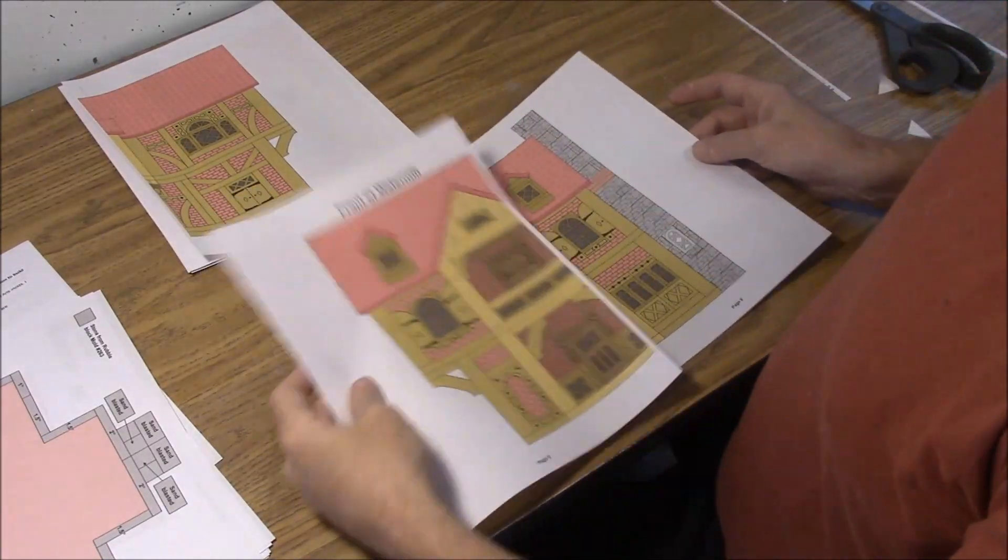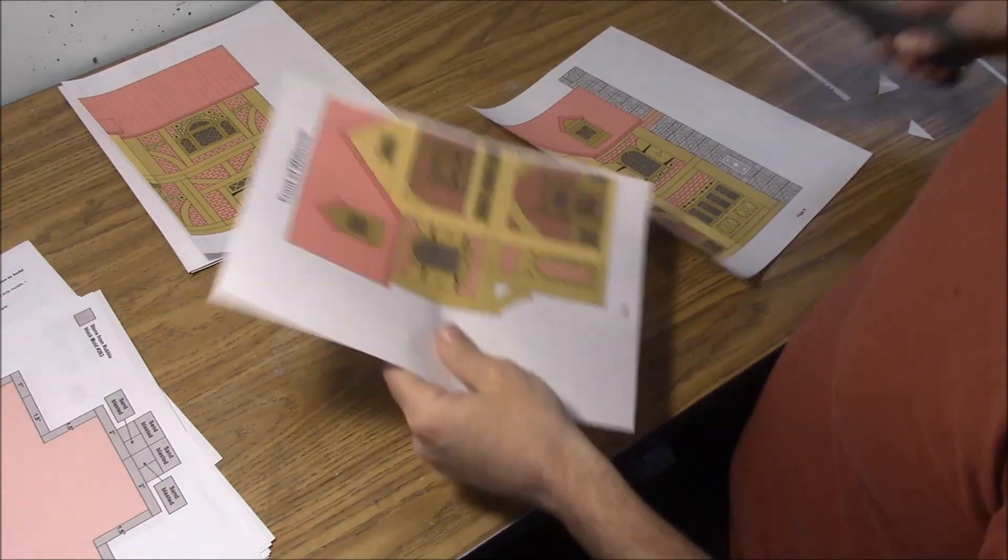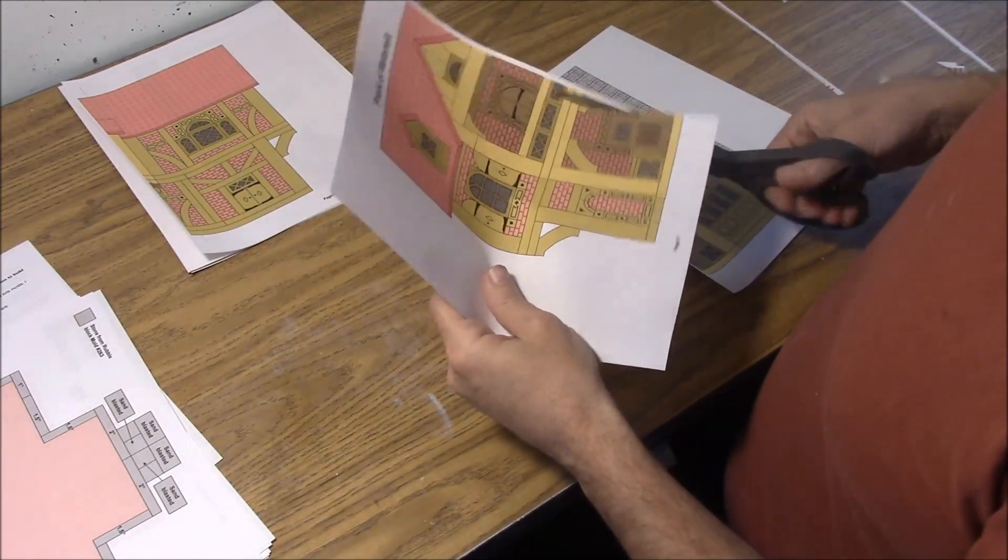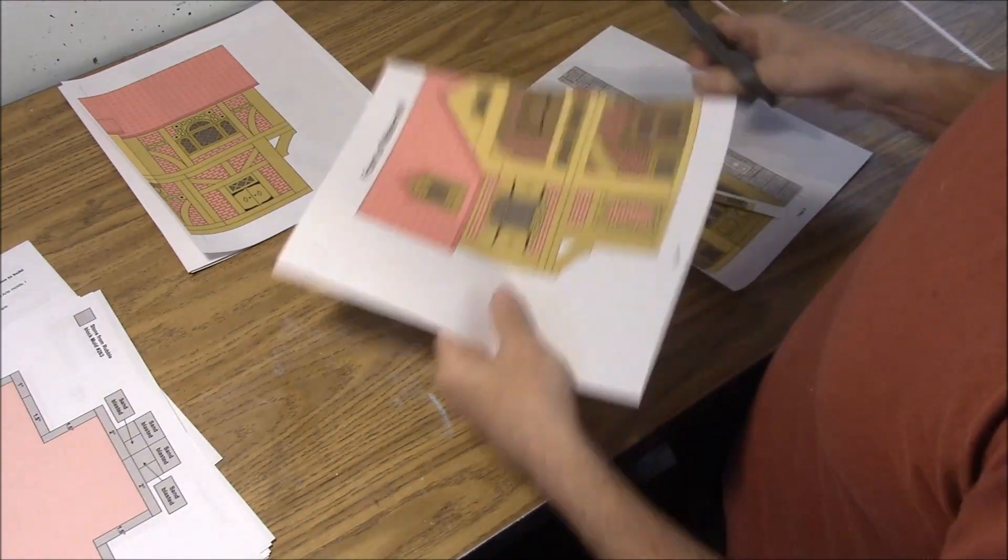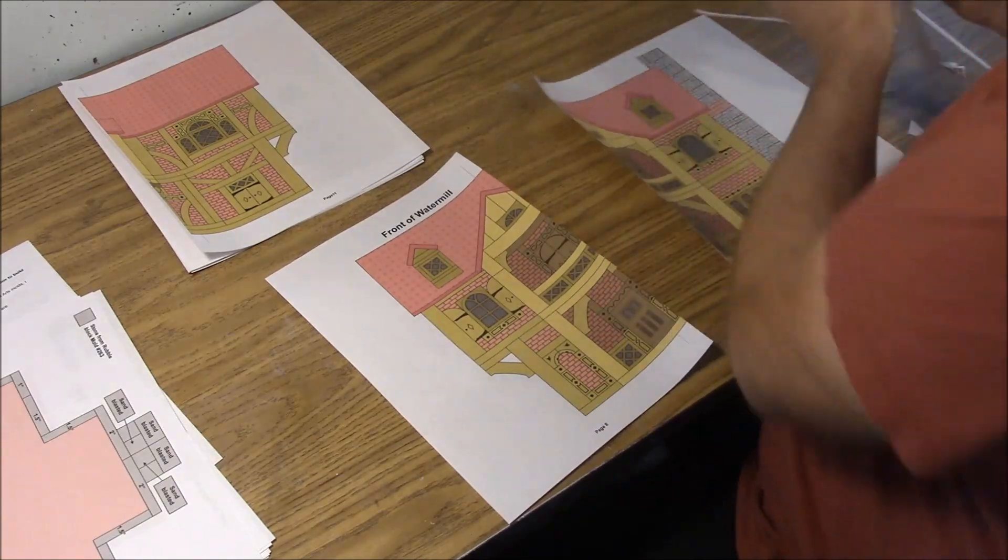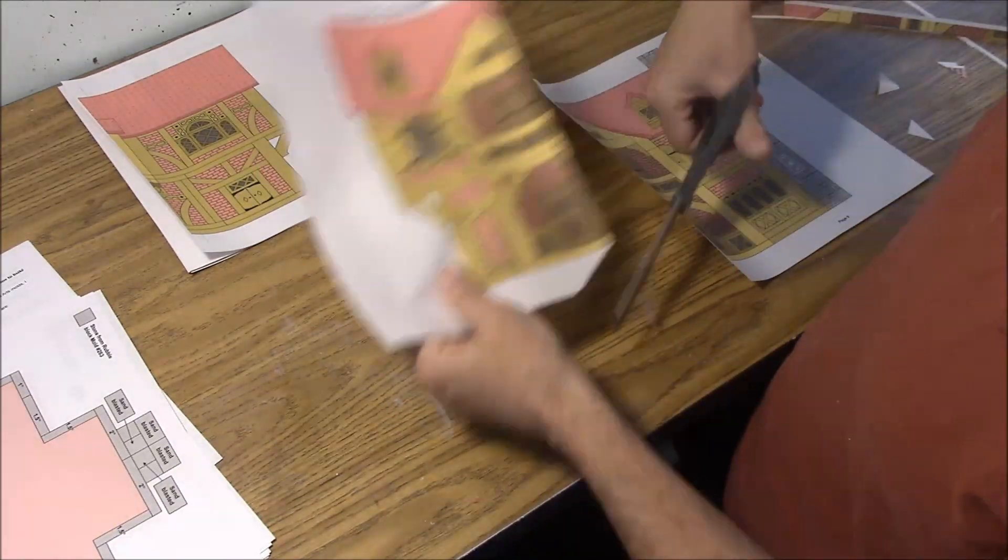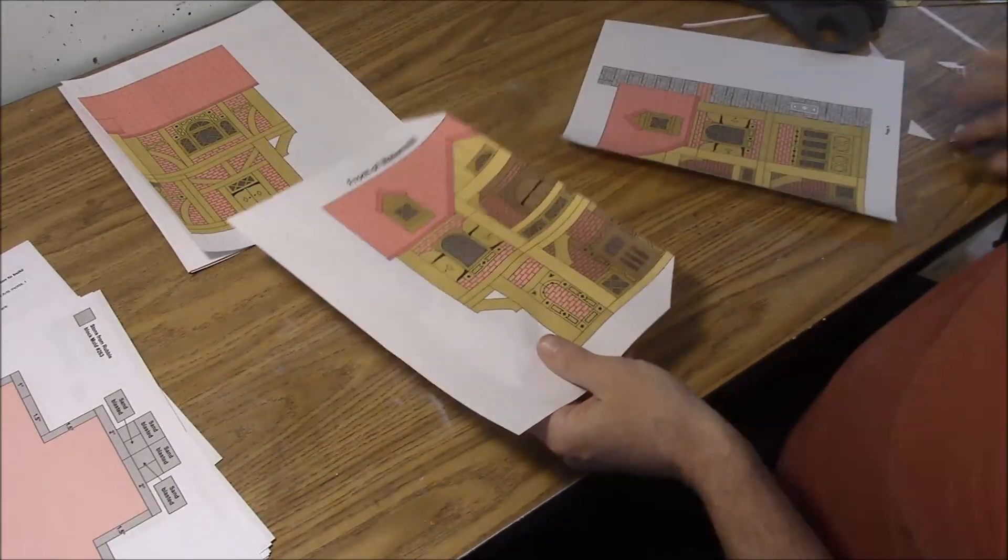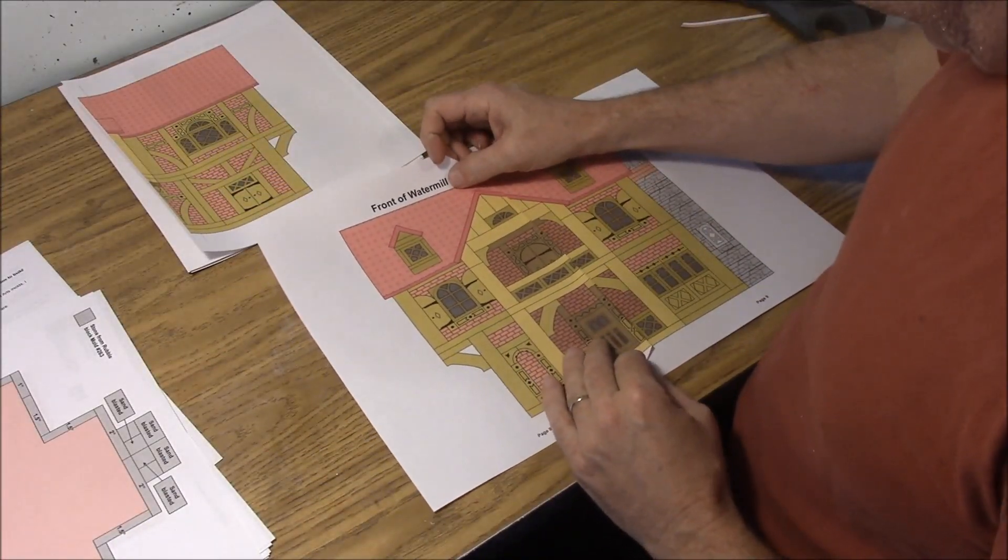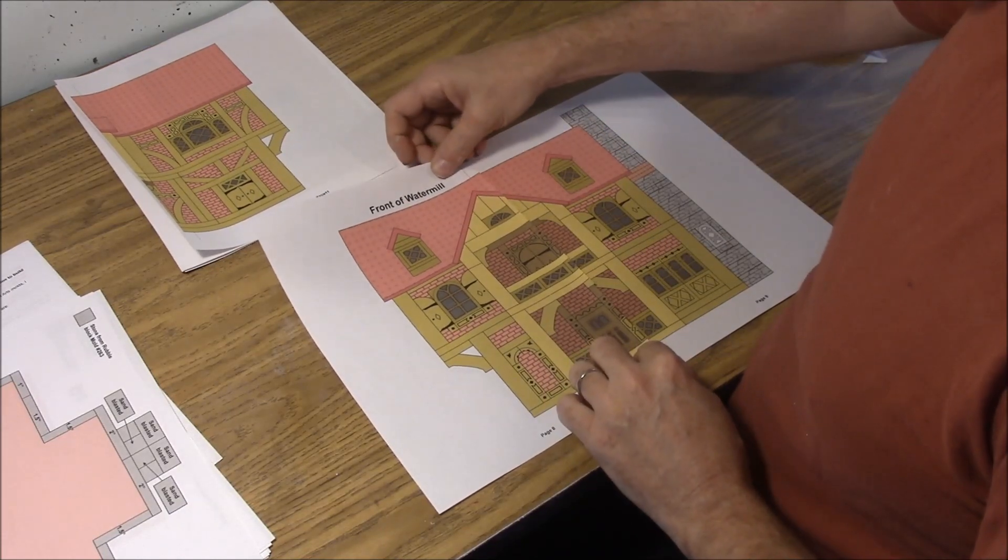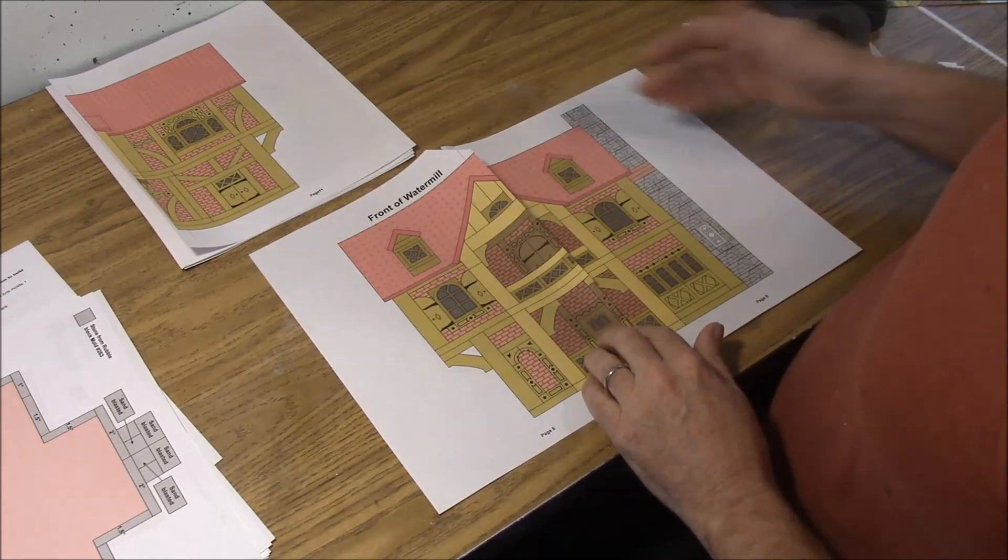Now, you can also do the same thing and piece together these front and side views of the house if you want to. It's not real critical if you don't because these are basically just for reference. The reason I put them in there is just sometimes when you're building something and you're wondering, where does this go? What does this piece have to do with something else? This actually gives you kind of a nice reference to see exactly what pieces go where and how they fit together.